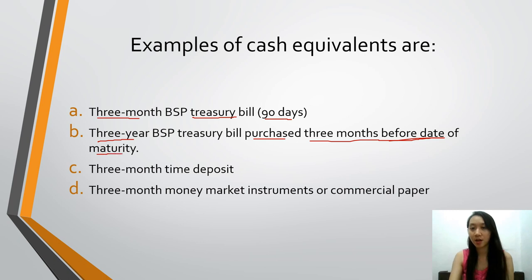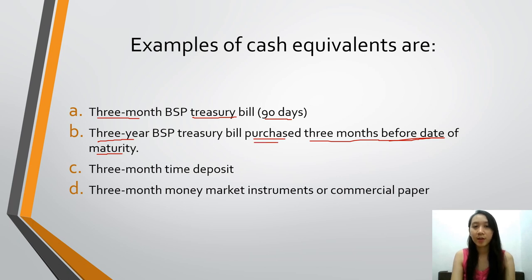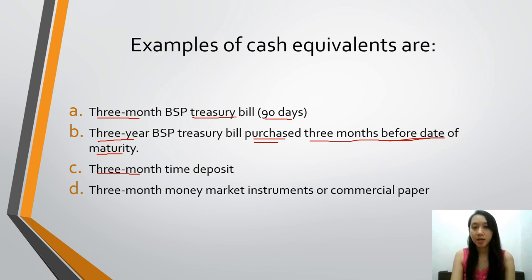So you need to memorize and not forget the rule: it must be purchased or acquired three months before the date of maturity. Next one is three-month time deposit — similar to the treasury bill in letter A, 90 days. And next, three-month money market instrument or commercial paper. Note that money market instrument is different from money order — don't get confused between those two.